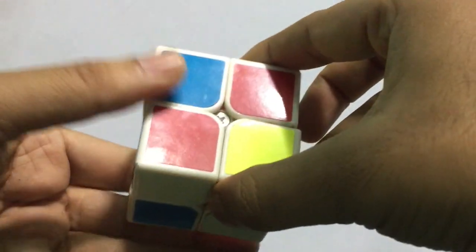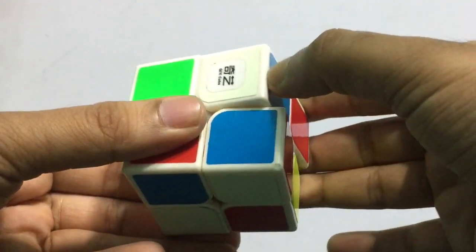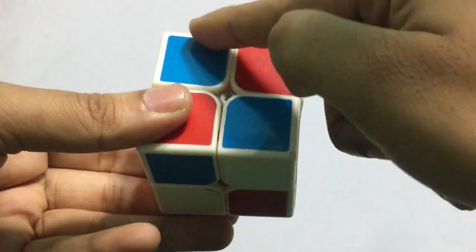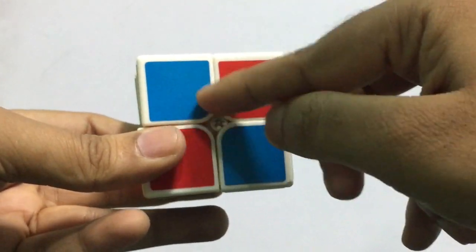Now find another white which has blue, like this one has blue. You move it in such a way that this should be like a corner. This should make a corner like this corner.